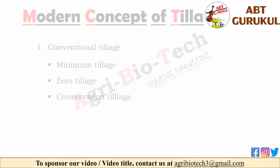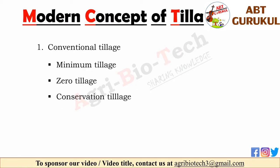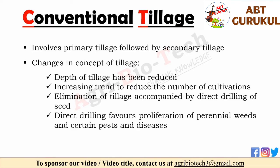Now let's see some modern concepts of tillage. These are conventional tillage, minimum tillage, zero tillage, and conservation tillage. Conventional tillage involves primary tillage to break, open and turn the soil, followed by secondary tillage to obtain the seed bed for sowing or planting.